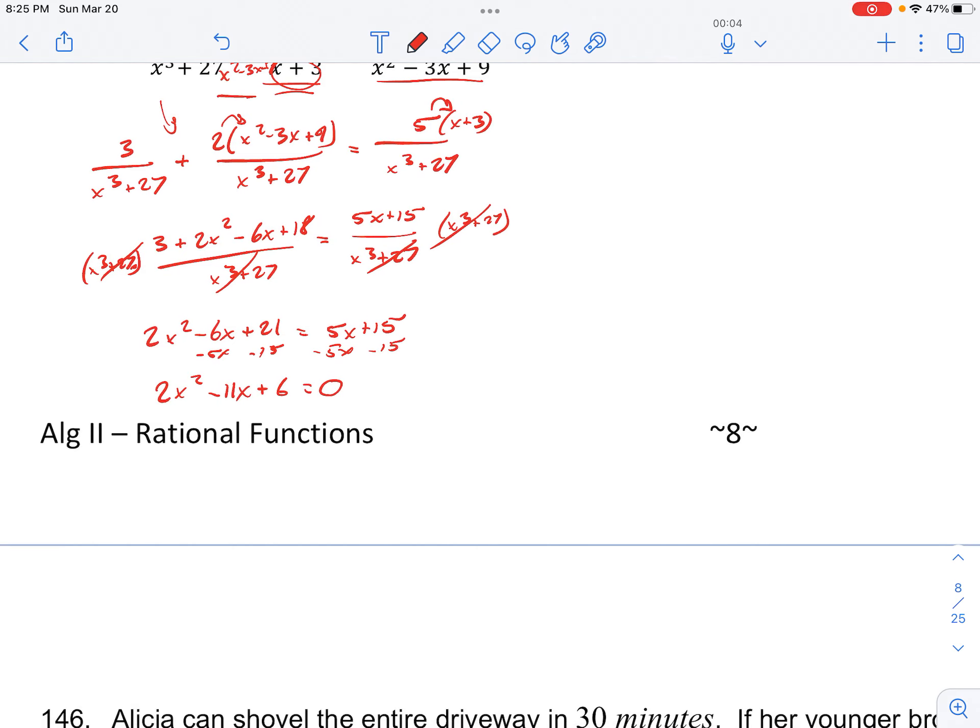And now if we want to factor this, we want 2 numbers that multiply to the product of a and c, so that's 12, but add to negative 11. So it doesn't look like we can factor that easily, or it would be easier to do the quadratic formula for this.